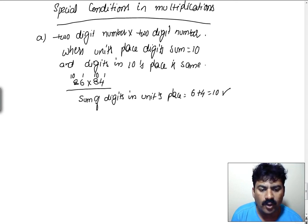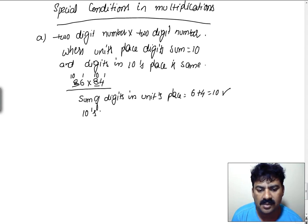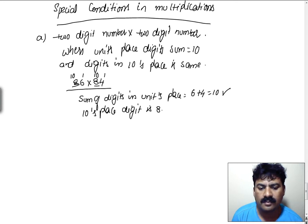And if you look into the tens place digit, it is eight and eight — the tens place digit is eight in this case. Then I can do the calculation easily.